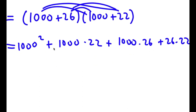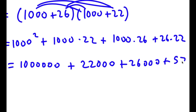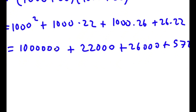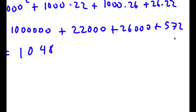It's much simpler to solve as you can see. 1000 squared is 1,000,000. 1000 times 22 is 22,000. 1000 times 26 is 26,000. And 26 times 22 is 572. So now to add all these up: 1,000,000 plus 22,000 plus 26,000 is 1,048,000, and we have 572 at the end. So this is my answer: 1,048,572.